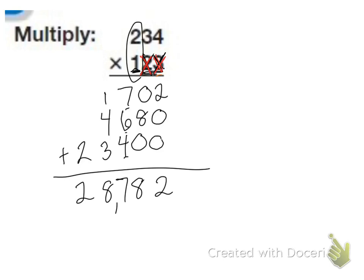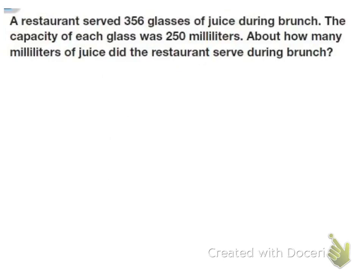Now we need to know how to perform this with paper and pencil. Most people will use a calculator because it can take a really long time. But for this class, you're going to do it by paper and pencil. The next problem says, a restaurant served 356 glasses of juice during brunch. The capacity of each glass was 250 milliliters. About how many milliliters of juice did the restaurant serve during brunch?